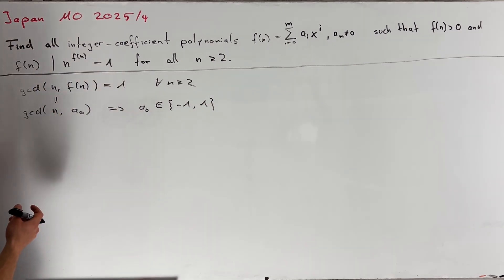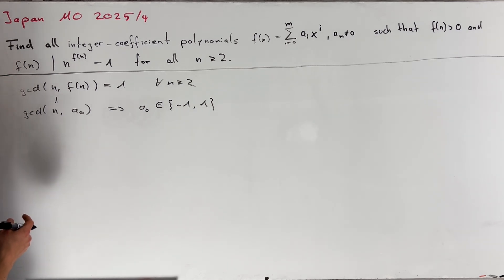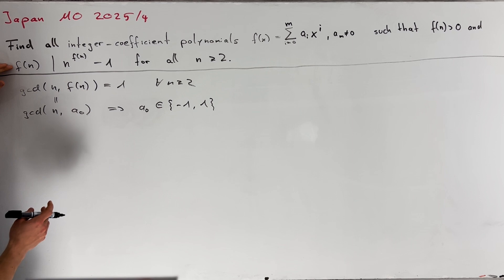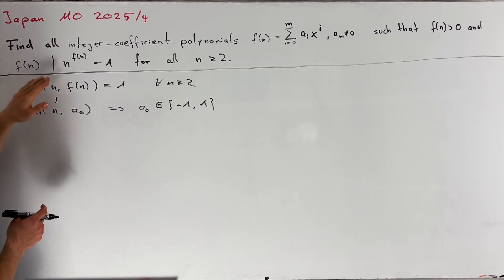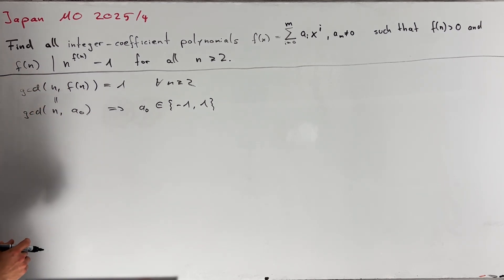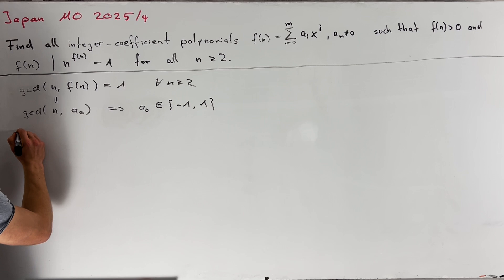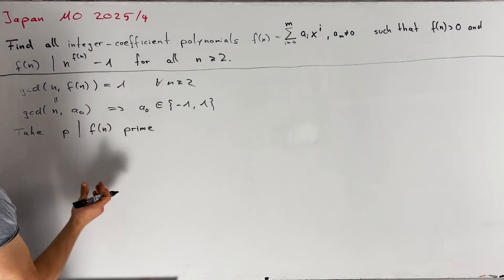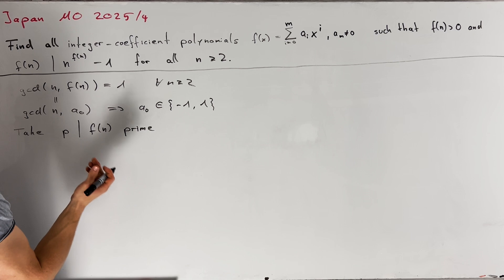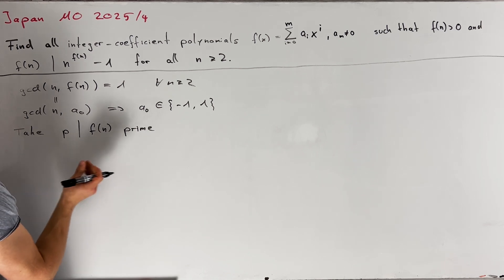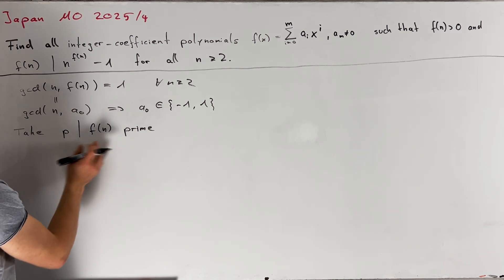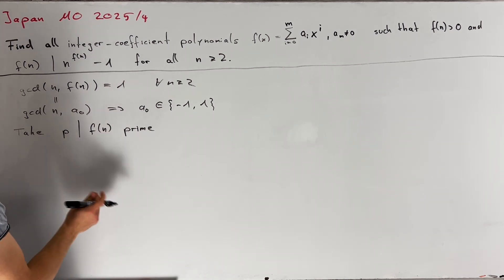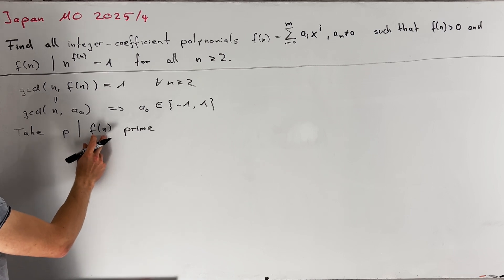Whenever we have a divisibility condition, it can be a good idea to consider a prime divisor p dividing the left-hand side, because it's often easier to work with prime numbers. Therefore, let's take p dividing f(n). We recall that f is a polynomial, so the residue class of f(n) modulo p only depends on the residue class of n modulo p.